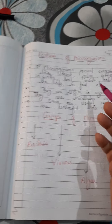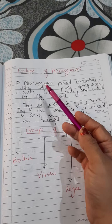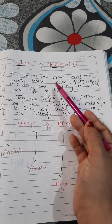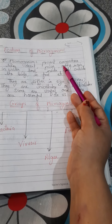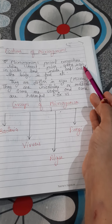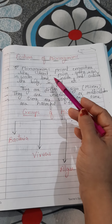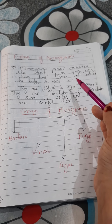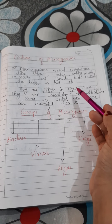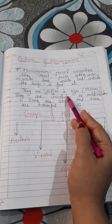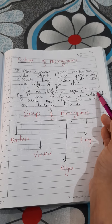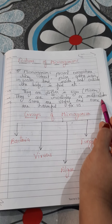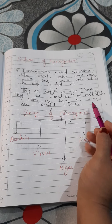The features of microorganisms: they are present everywhere — you can say they are omnipresent. They are present in deserts, polar areas, in springs, in air, in water, on land, inside and outside the body of organisms, and in food items also. They differ in sizes and are generally measured in microns. They are unicellular as well as multicellular. Some are useful and some are harmful for us.